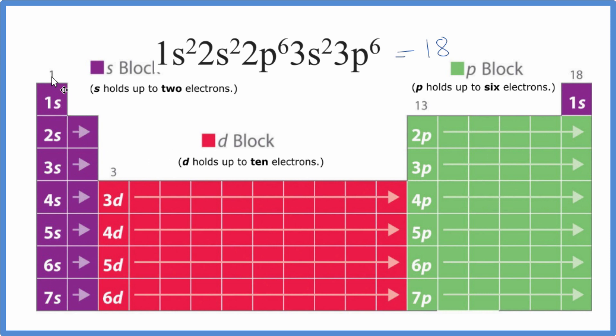So when we look at this, all of these end in s1, s2, then we go 3d1 all the way to 3d10, because d that can hold up to 10 electrons. And then p, which can hold up to 6, we have p1, 2, 3, 4, 5, 6.